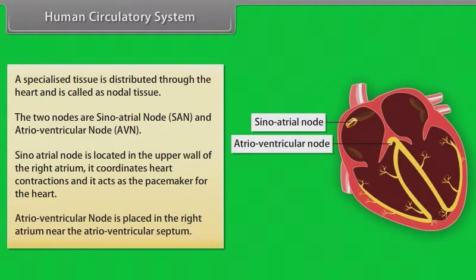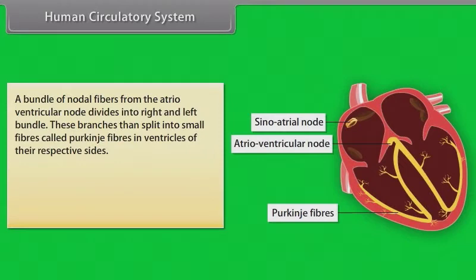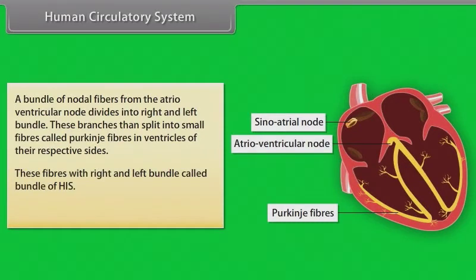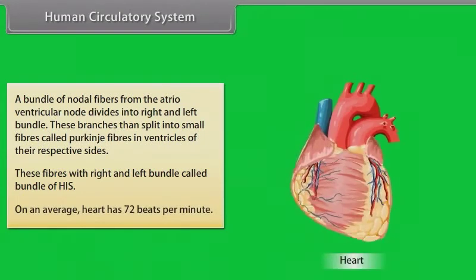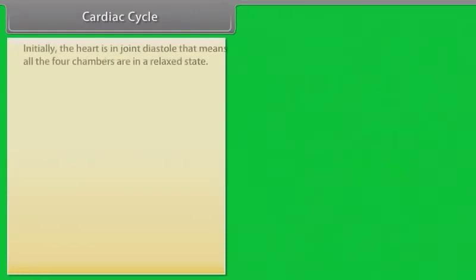The AV node is present in the right atrium near the atrioventricular septum. A bundle of nodal fibers from the AV node divides into right and left bundles, which split into small fibers called Purkinje fibers in the ventricles. These fibers with the right and left bundles are called the bundle of HIS. On average, the heart has 72 beats per minute.